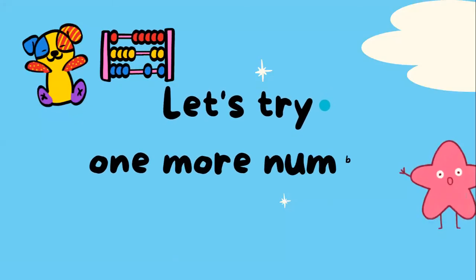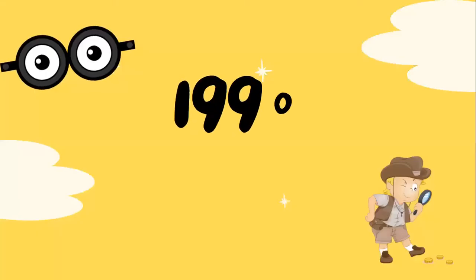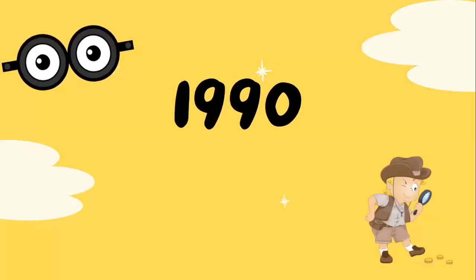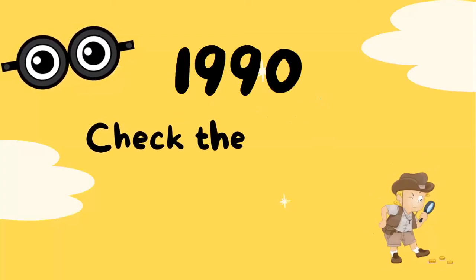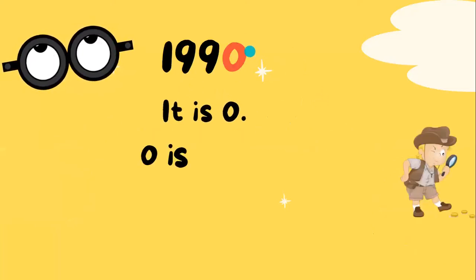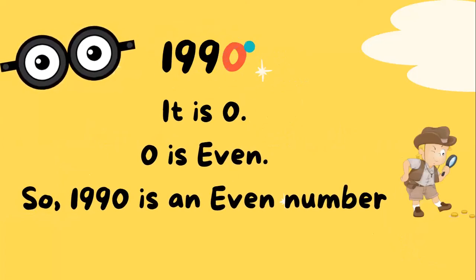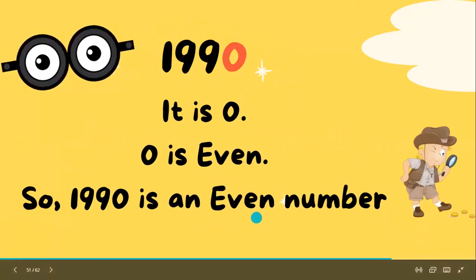Let's try one more number: one thousand nine hundred and ninety. Check the last digit of this number — it is zero, and zero is even, so one thousand nine hundred and ninety is an even number.